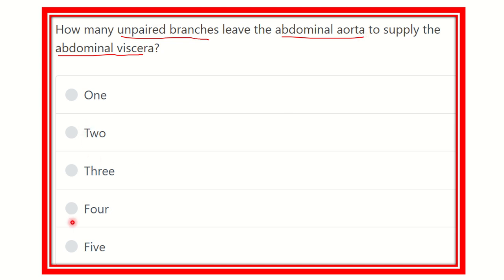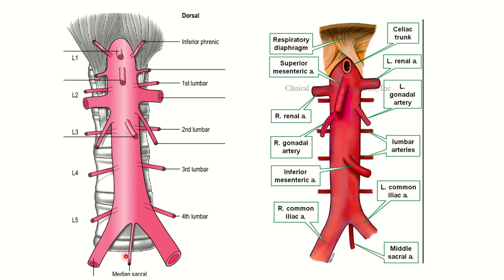Let's look at the branches of the abdominal aorta first. The abdominal aorta starts at the level of the thoracic vertebra and terminates at the level of the fourth lumbar vertebra. We can see different structures — some are paired branches and some are unpaired branches.